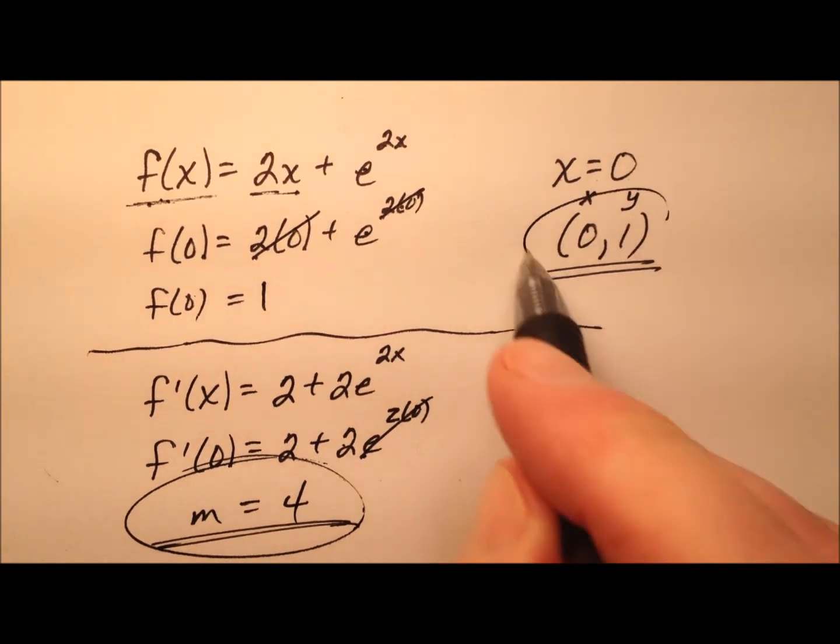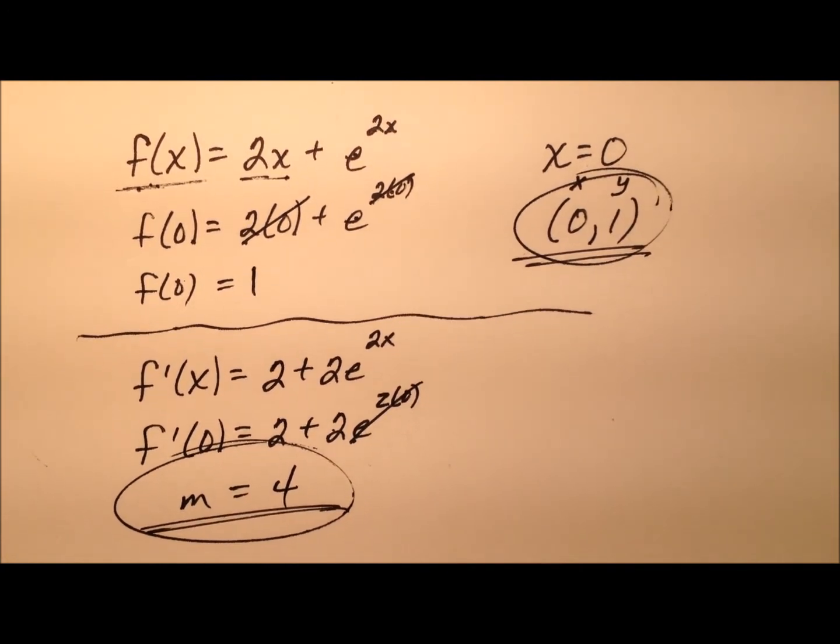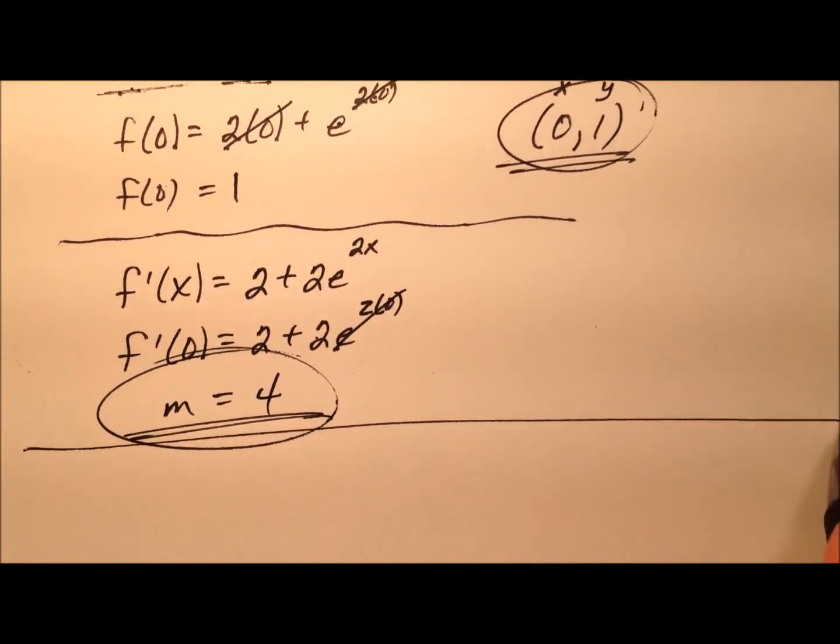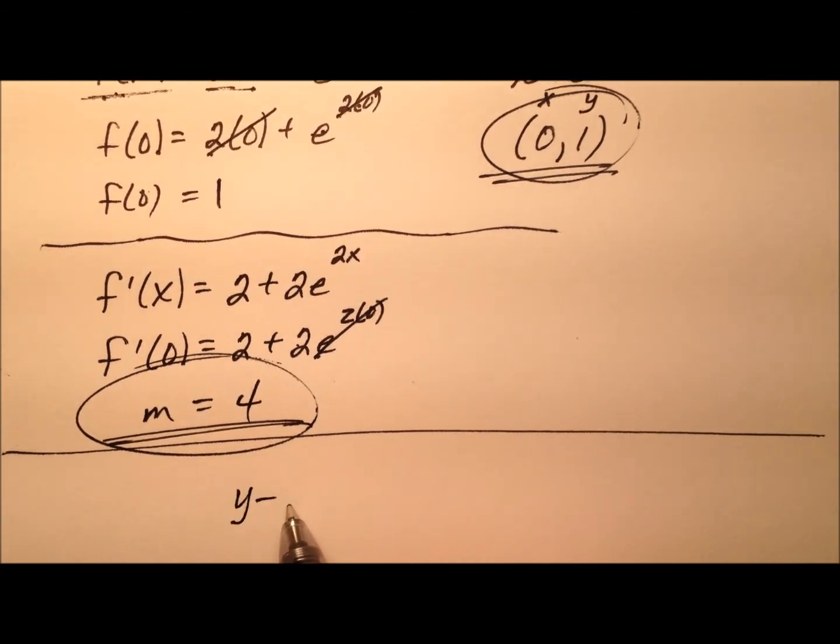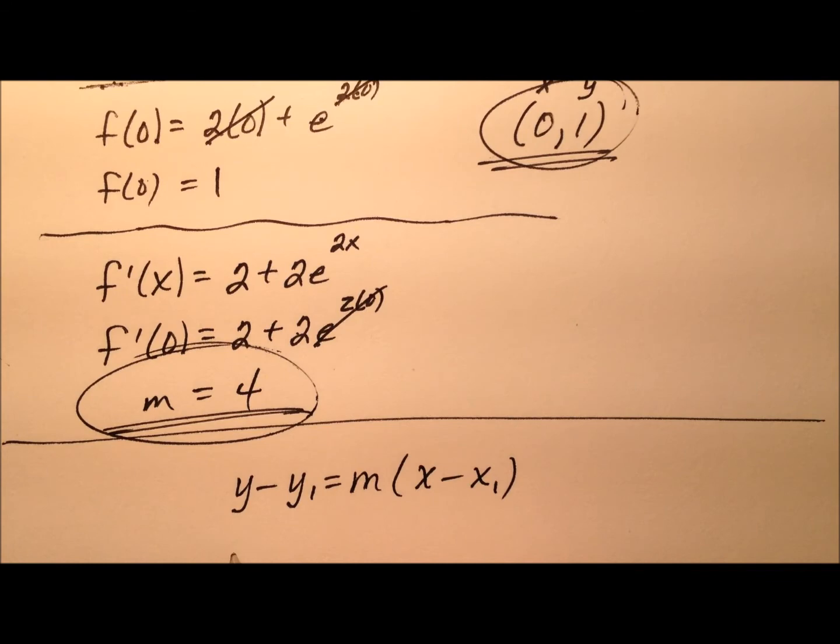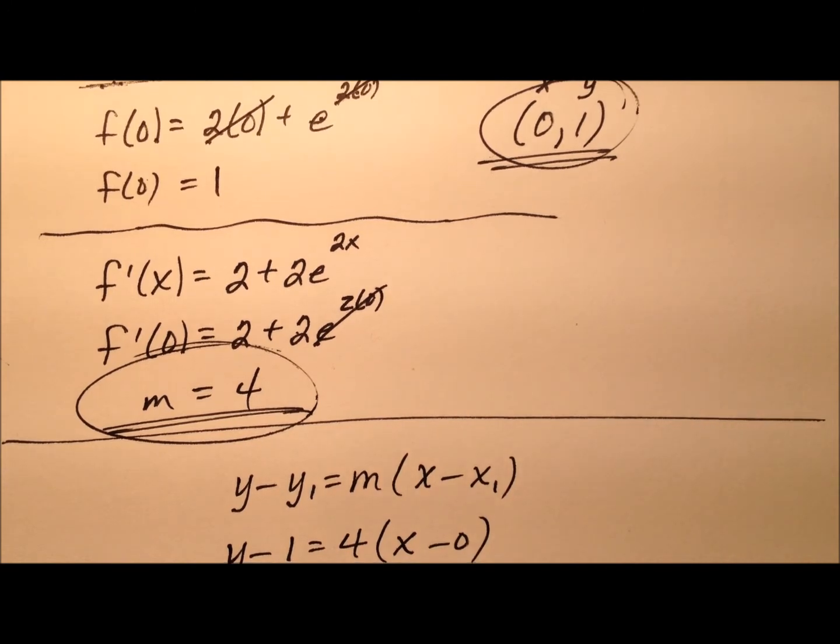I have a slope and an ordered pair, so let's write the equation of this line in point slope form: y minus the y coordinate equals the slope times the quantity x minus the x coordinate. So y minus 1 equals 4 times (x minus 0).